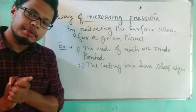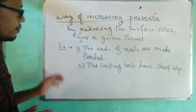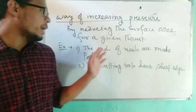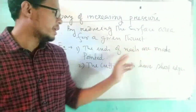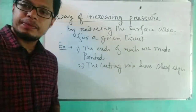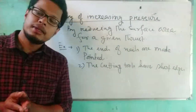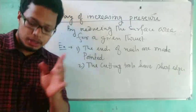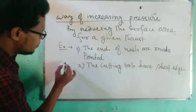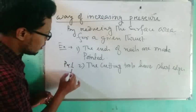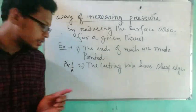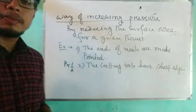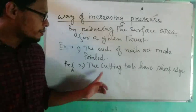For example, consider the nails. The ends of nails are made pointed — why? So that large pressure is exerted on the pointed ends. This is because P is proportional to 1 over A: when the area is less, the pressure will be more.